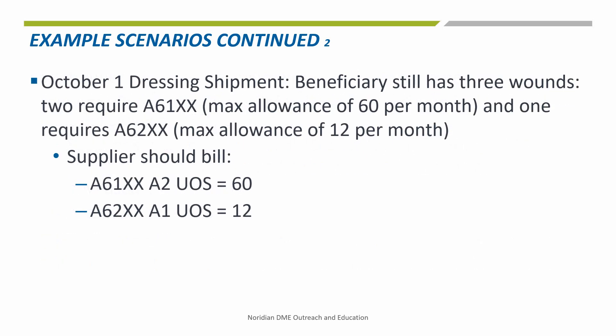Finally, on October 1st, the beneficiary still had three wounds. Two of those wounds require the same dressing with a maximum of 30 times 2, which equals 60. So the A2 modifier is correct, as that dressing is being used on two wounds. The beneficiary is using the second dressing on only one of the three wounds, which has a maximum of 12 per month, so the A1 modifier is correct.